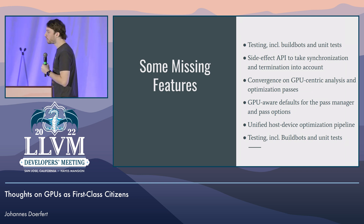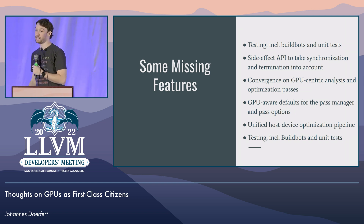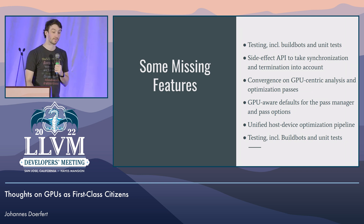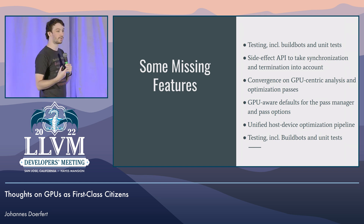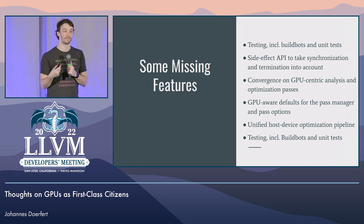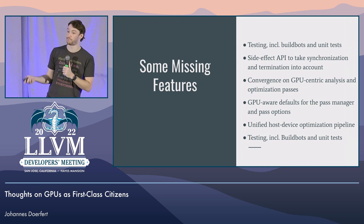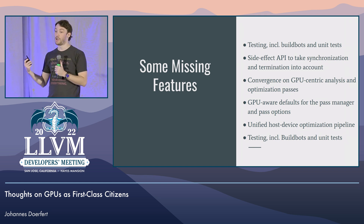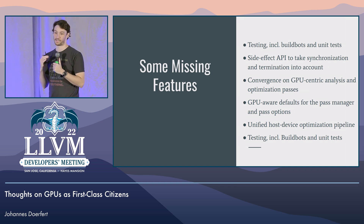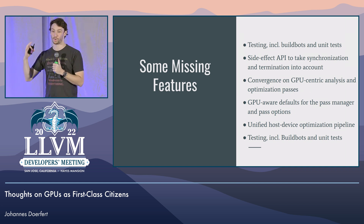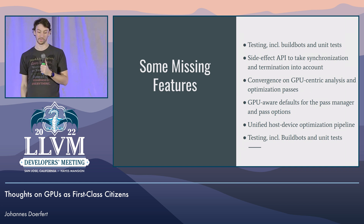We have OpenMP-specific passes that do OpenMP-specific GPU stuff but not for other languages — that's suboptimal in both directions. Unified host and device optimizations: there have been different proposals on how to do that, and we have a few prototypes. It would be really cool as a long-term feature.